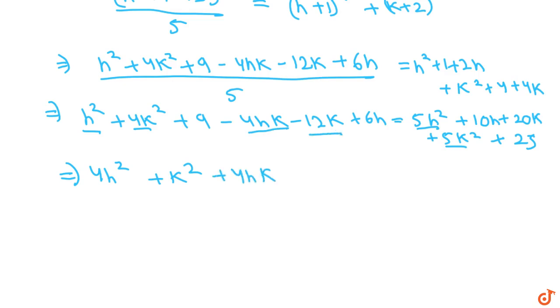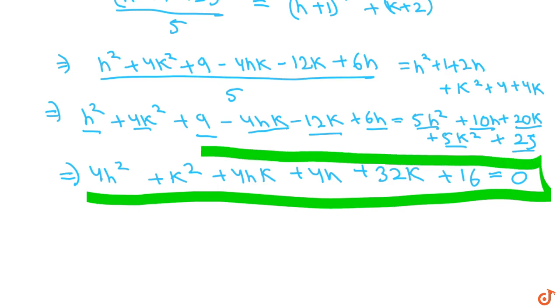k terms together and h terms together you will get plus 4h, then the constant terms we will get plus 16. And this is the equation of parabola.